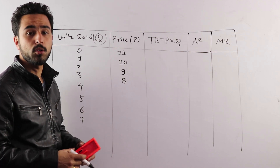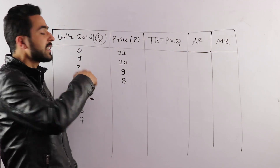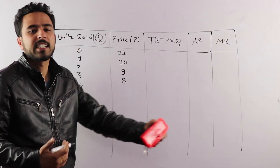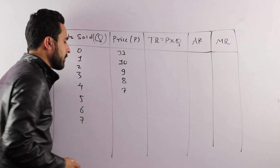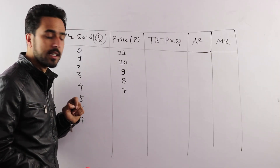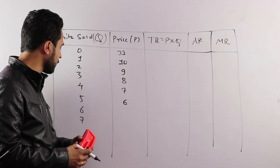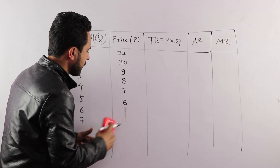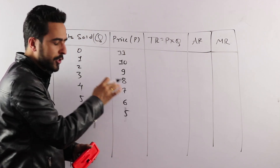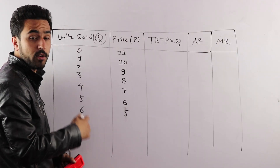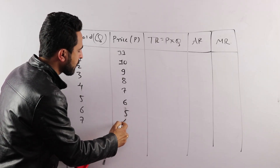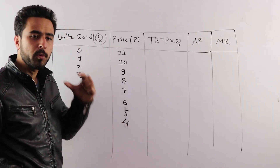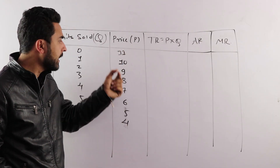The price at zero units is around 9.5, then 8.9, and decreasing further. Under monopoly, the firm determines its own price. As more units are sold — going from 5 units to 6 units — the price must be reduced, because the monopolist can control price to maximize sales.